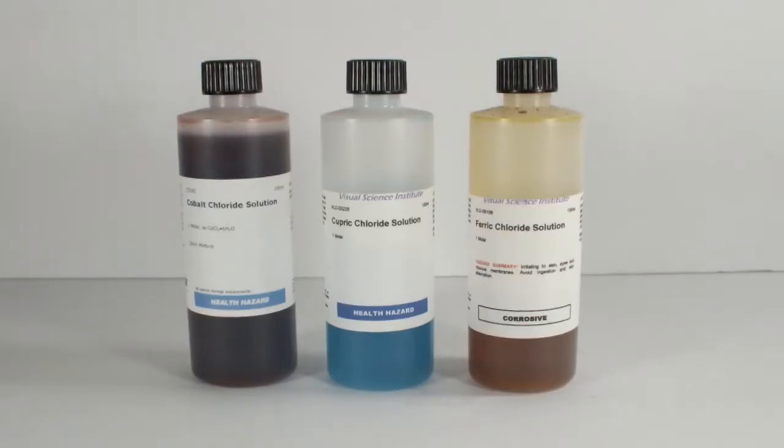I happen to have one molar stock solutions of three cations that produce insoluble phosphates. The same cobalt chloride I used in that old video, copper 2 chloride, and iron 3 chloride. I thought about using nickel 2 too, but I only have the sulfate, and I arbitrarily decided I wanted to use only chlorides.